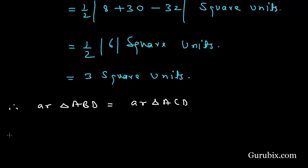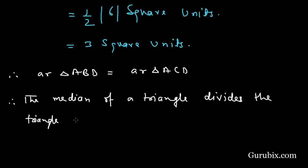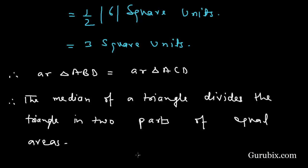Therefore, the area of triangle ABD equals the area of triangle ACD, both being 3 square units. Therefore, the median of a triangle divides the triangle into two parts of equal area. This is the solution of the question. Thank you.